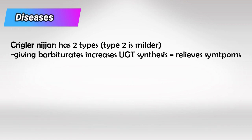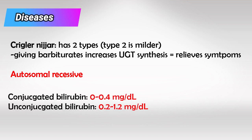Here is some additional information that is important. Crigler-Najjar syndrome has two types, with type 2 being the milder form. Giving barbiturates for Crigler-Najjar syndrome will actually relieve symptoms by increasing UGT synthesis. All hereditary hyperbilirubinemias are autosomal recessive diseases. You should also remember the values for conjugated and unconjugated bilirubin levels.